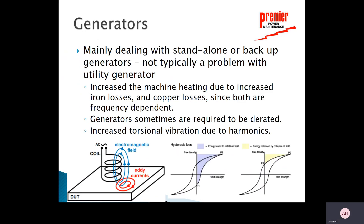When we start talking about generators — and this is also a transformer issue — we want to talk about hysteresis and eddy currents. This is not typically a problem with the utility generator but with backup and standalone generators. These harmonics can cause increased heating, and heat is always the number one enemy in electrical systems because it damages insulation. This heating has a lot to do with iron losses and copper losses.